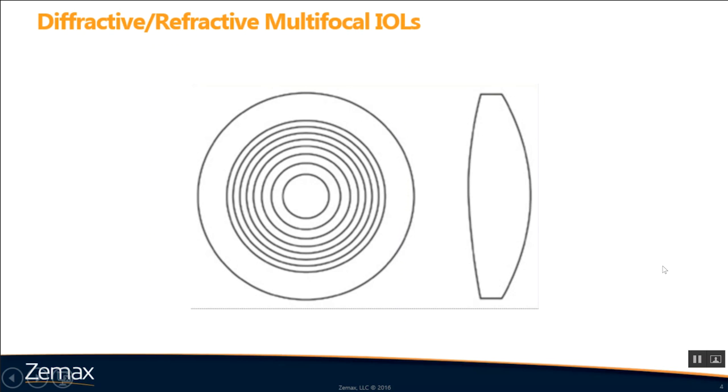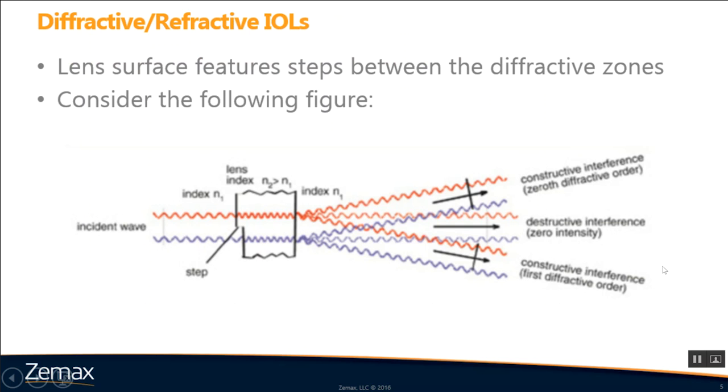And here, we'll just show that type of structure. So, here you see those annular zones, and obviously this figure is exaggerated here, these zones are going to be micron-sized. So, they're definitely not going to appear that large. And in terms of that step structure, here's a figure demonstrating that, again, by using these steps, we're able to control the interference between incident light and create these multiple focal points.